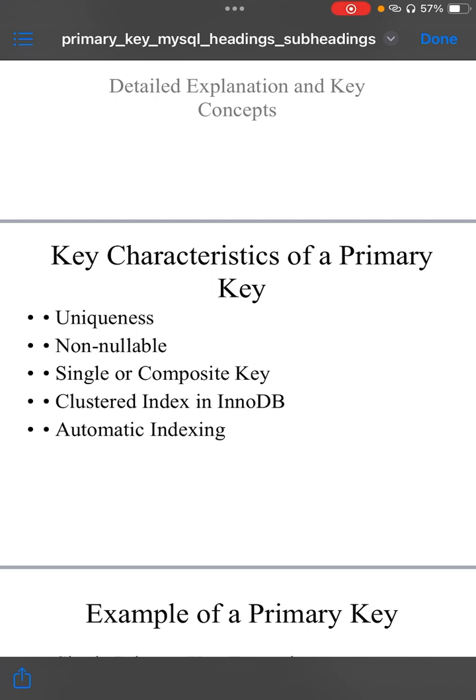Clustered index in InnoDB. In InnoDB storage engine for MySQL, MySQL's default engine, the primary key is implemented as a clustered index. This means the rows in table are physically stored in order of primary key. The clustered index helps make searches, updates, and deletions based on primary key extremely efficient. The entire table is effectively stored as part of primary key index, making access via primary key much faster than non-clustered index.